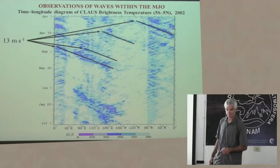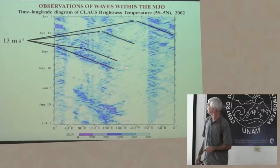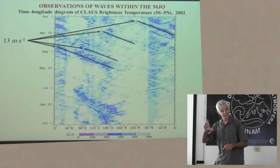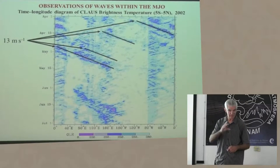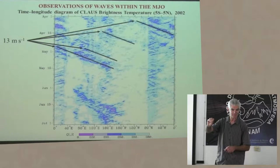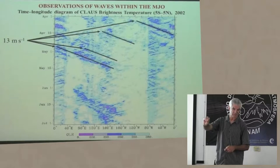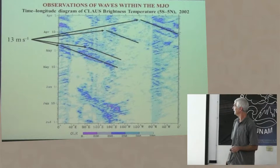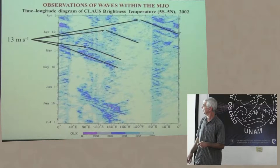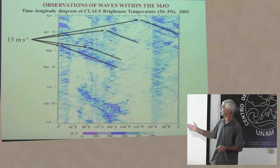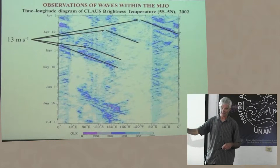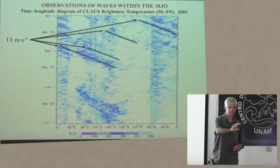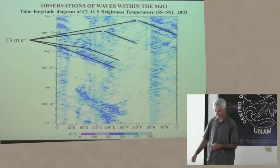[Question: How sensitive is the diagram to the scale of averaging? If you go down to one degree, can you still see these?] These features extend to about an equatorial Rossby radius in scale, so you need a few degrees unless you're averaging right along the axis of the wave. These waves are constrained to propagate along the equator — they propagate eastward and westward and are equatorially trapped.